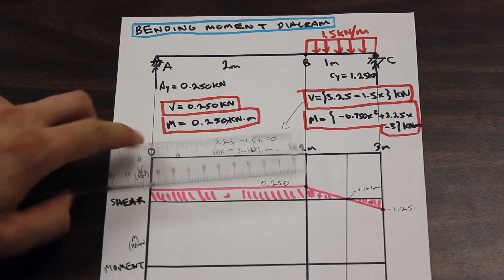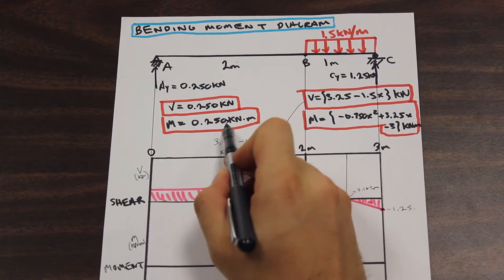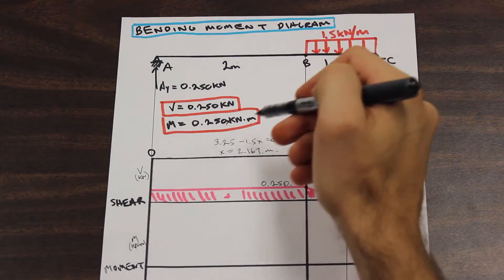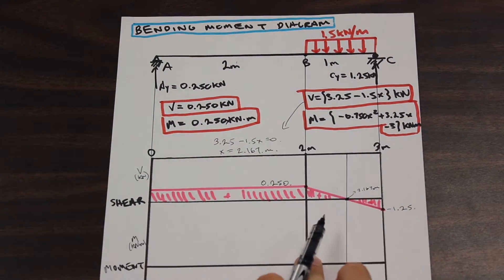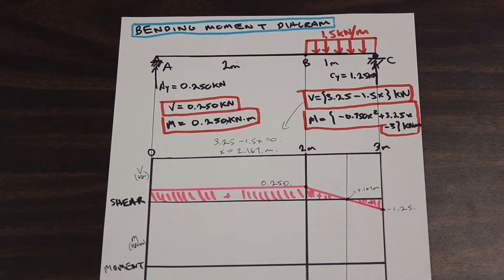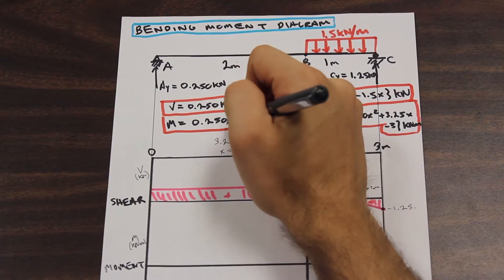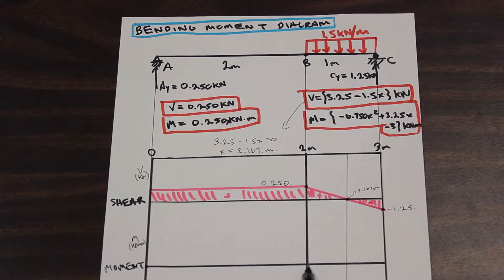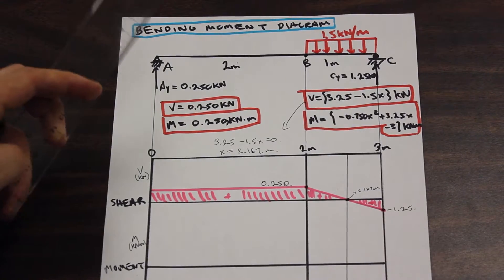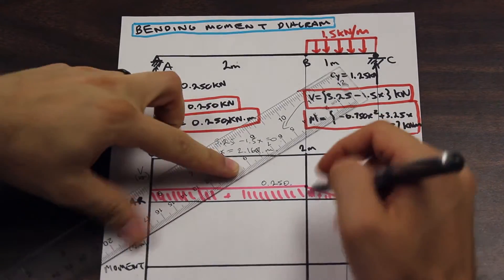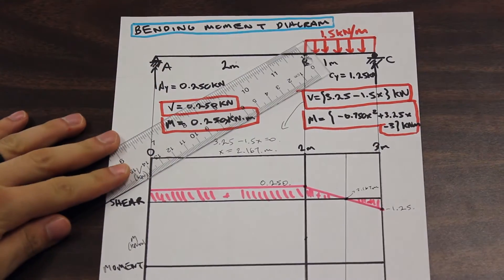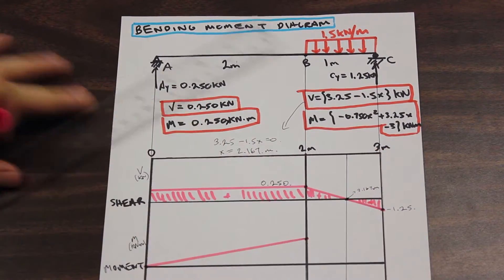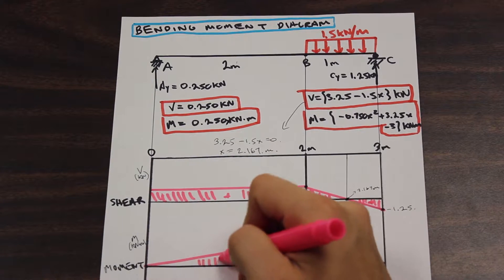So the moment here is 0.250x, that's our formula. And as we can see, same as this one, the moment is increasing linearly as we move from point A to B. And it's going to be increasing positively. So we're going to go ahead and plug in 0 for x. And that is obviously 0, so that's going to be our start point. And we're going to go ahead and plug in 2 for x. And that is going to give us 0.5. And we'll just assume that to be there. And we'll go ahead and draw a line connecting those two. That's that part of our beam.